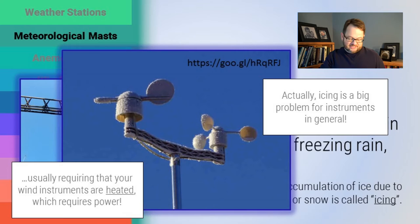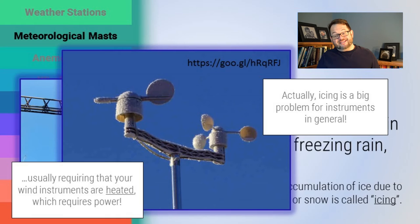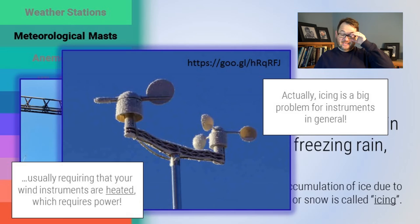Icing is a general problem in meteorology when it comes to instruments. When there's freezing rain or freezing fog, instruments get crusted with ice, which greatly influences their performance. Even if the instrument is still sending data, there's no reason to think it's sending correct information — do we really think a cup anemometer covered with ice is accurately reporting wind speed? This usually requires that instruments be heated. Most wind vanes and anemometers, especially at unmanned stations or up on masts, need procedures to ensure they are not accumulating ice.